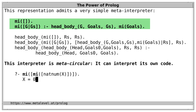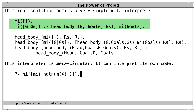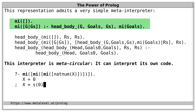This interpreter is metacircular — it can interpret its own code. For example, we can use our interpreter to run natNum as before, and we can also interpret the interpreter running the program, which of course gives the same results. And this works arbitrarily deeply layered — we can interpret the interpreter interpreting the interpreter interpreting our sample program. This is really unique to Prolog: no other programming language allows such a concise metacircular meta-interpreter.